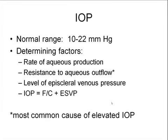The normal range of IOP goes between 10 and 22 mmHg. This is based on a mean pressure of 16 mmHg with a standard deviation of 3 mmHg in the normal population. Therefore, anything outside two standard deviations is considered abnormal.